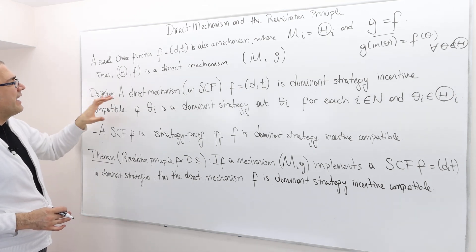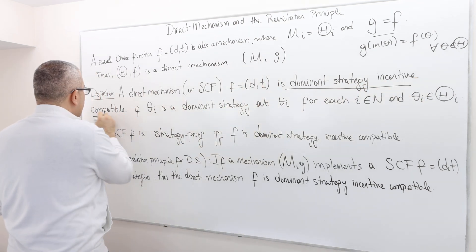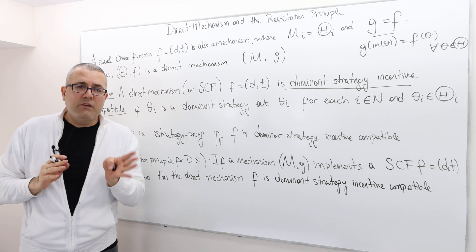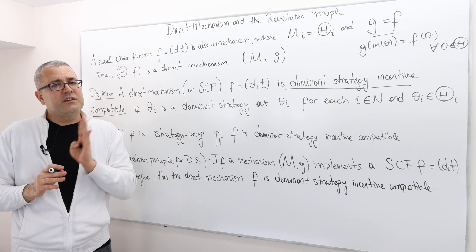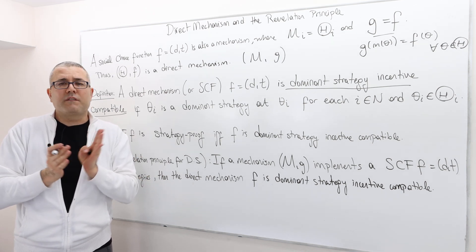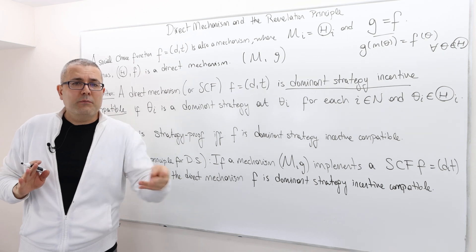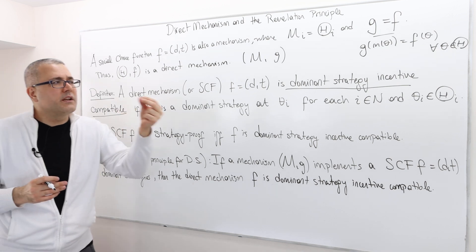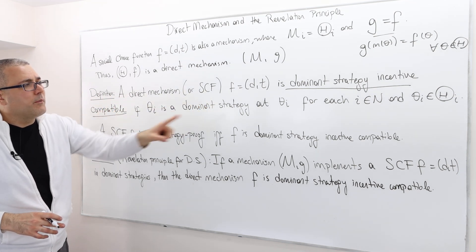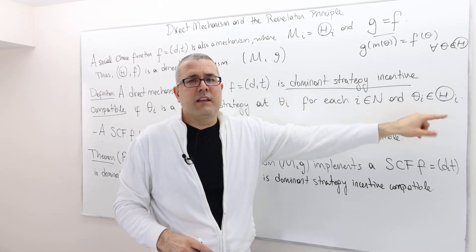An important definition: a direct mechanism, or a social choice function F, is dominant strategy incentive compatible. It's a long name — dominant strategy incentive compatible — which means intuitively that players have a dominant strategy to tell the truth, whatever their true type is. So whatever the player's true type is, all players are going to tell the truth, because that is a dominant strategy for them. A direct mechanism F is dominant strategy incentive compatible if θᵢ — telling the truth — is a dominant strategy at θᵢ for each player i and each θᵢ in capital Θᵢ.